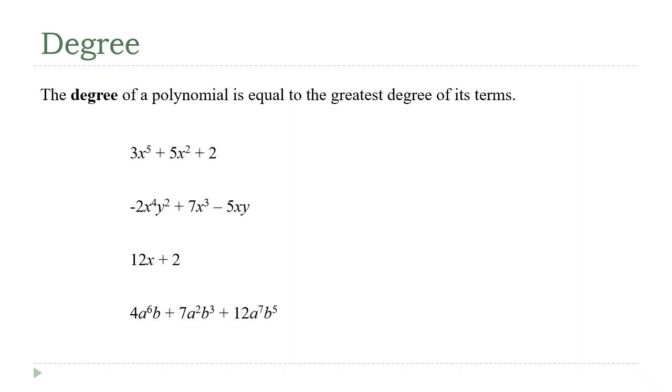All right, so let's look at some examples again. Here, the degree of the first term is five, the degree of the second term is two, and the degree of the last term is zero, which means the degree of the polynomial itself is five.